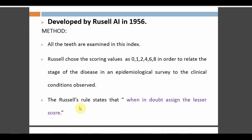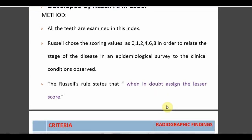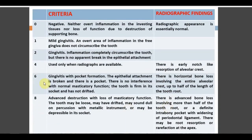Russell's Rule: when in doubt, always assign the lesser score. For example, if confused between 1 and 2, give 1; between 0 and 1, give 0; between 6 and 8, give 6. This rule helps avoid confusion. Score 0: no inflammation, no loss of function, no radiographic change. Score 1: mild gingivitis — overt inflammation in the free gingiva only. Score 2: gingivitis with inflammation completely circumscribing the tooth, no break in epithelial attachment. Score 4: radiographic finding only — early notch-like resorption of the alveolar crest, no clinical finding.